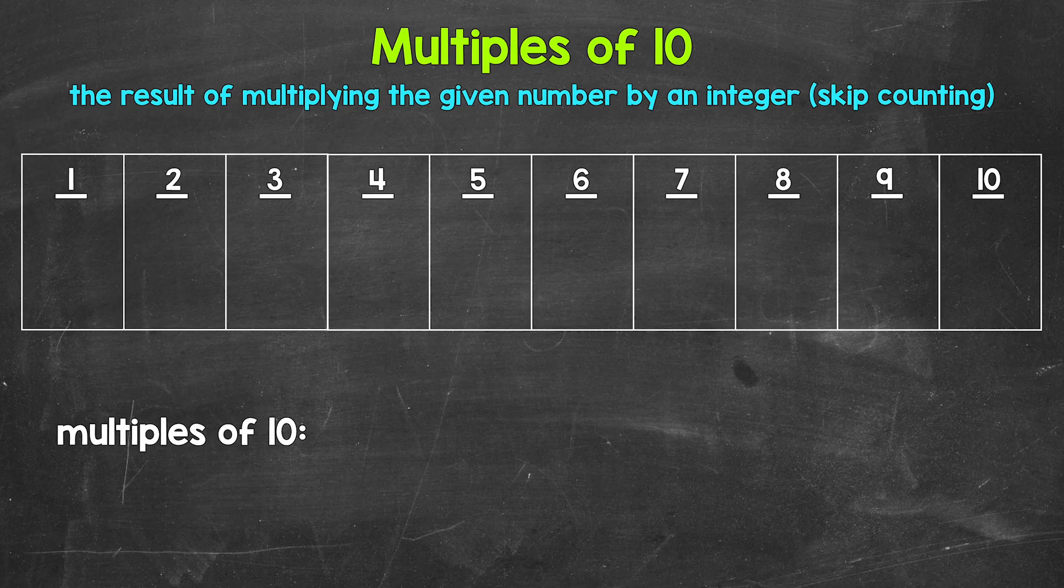So 1 times 10, 2 times 10, 3 times 10, so on and so forth. Another way to think about multiples is to skip count. So all of the numbers something is going to hit when counting up by that number, those are all going to be multiples.